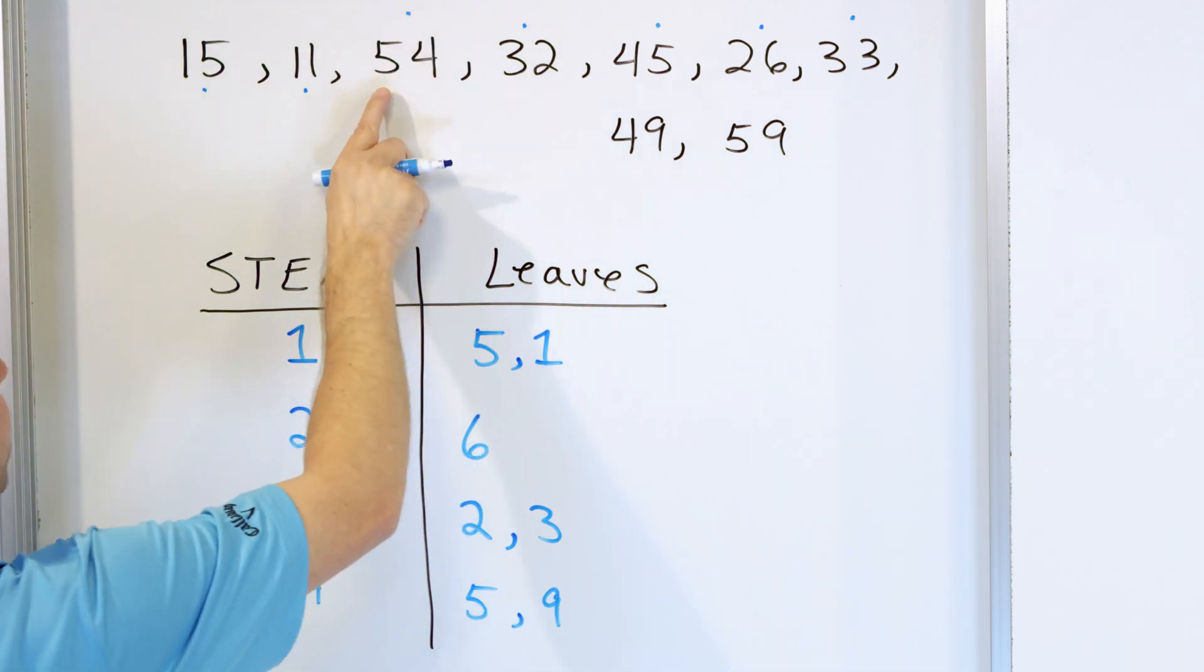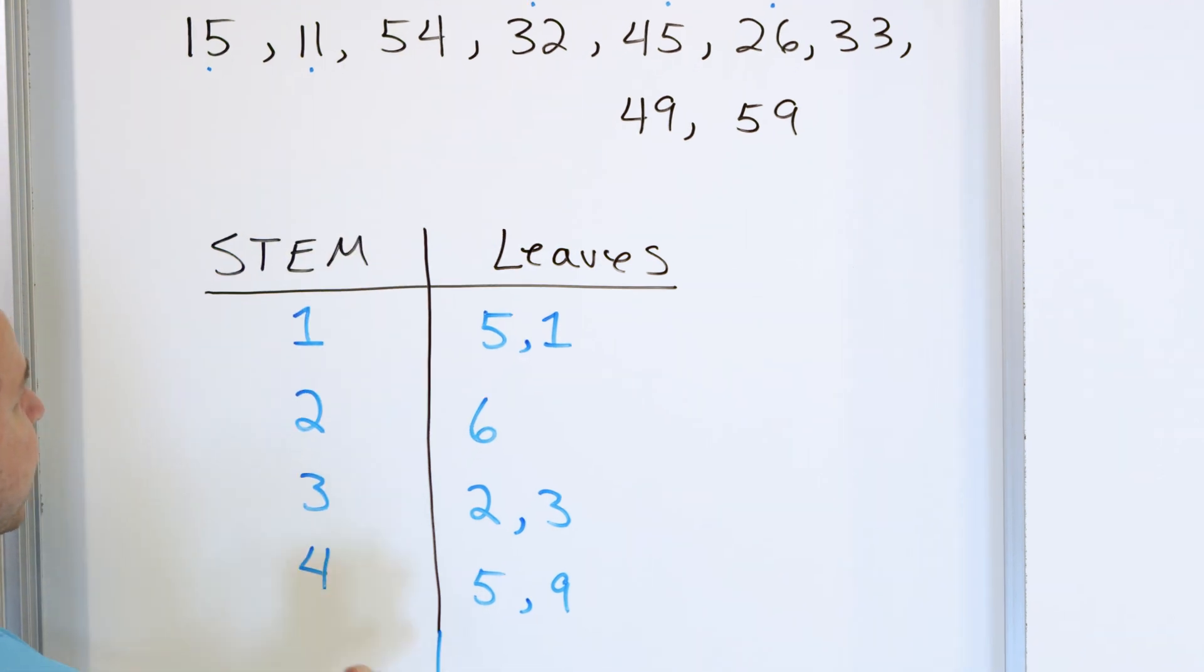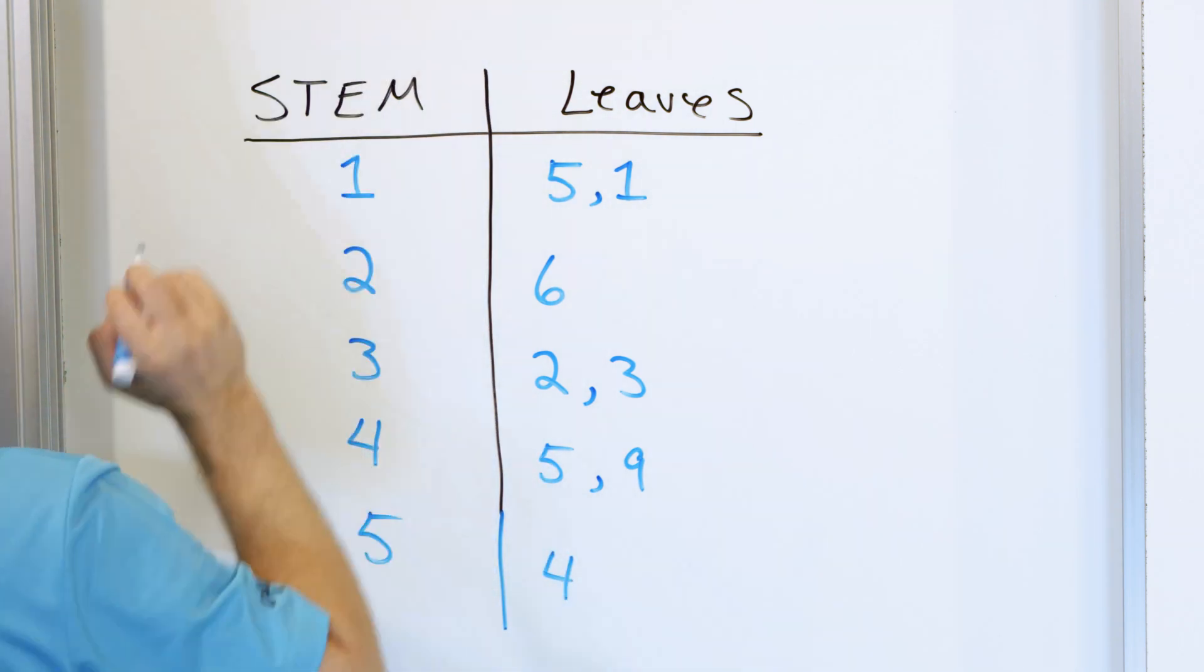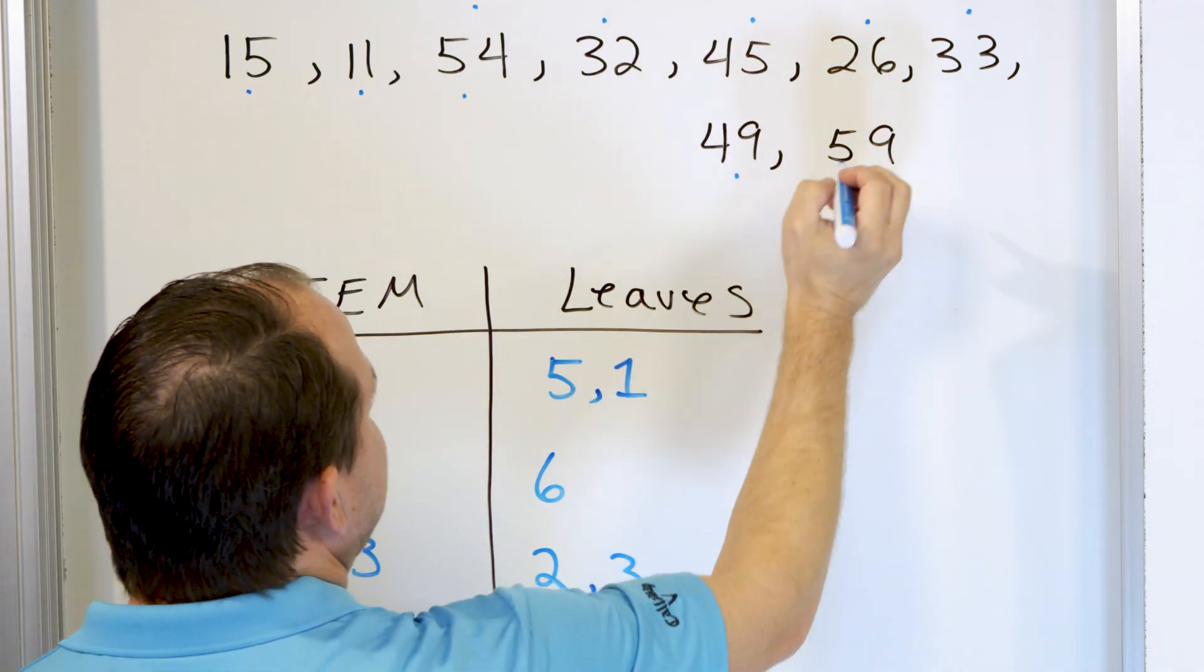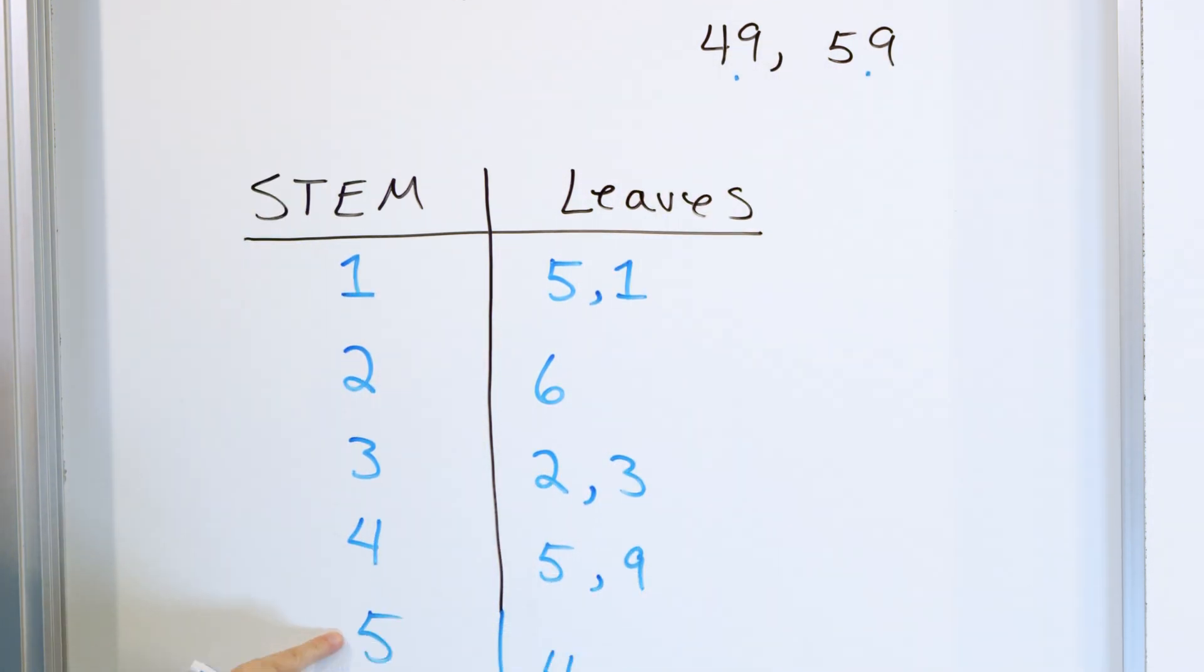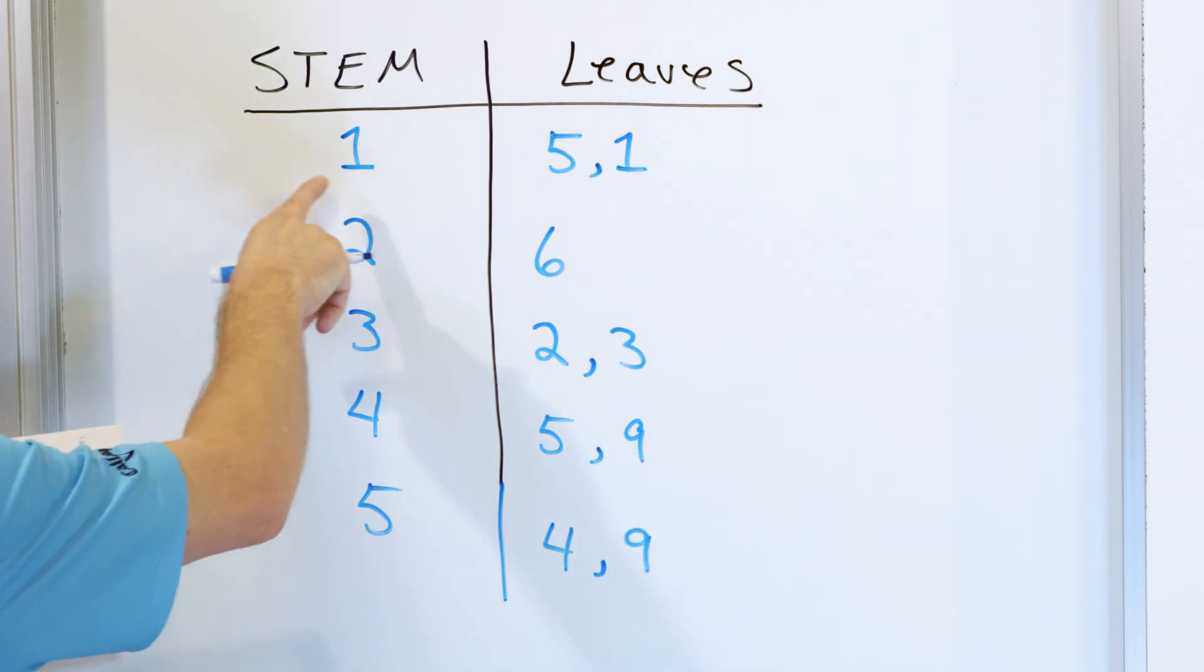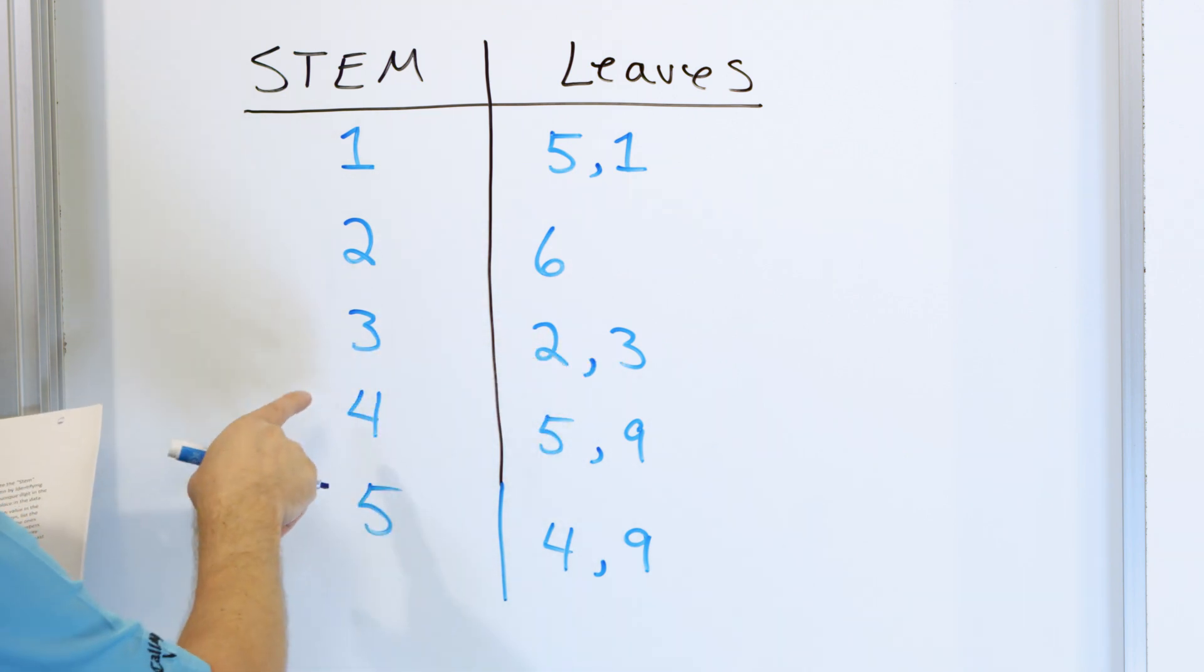And then finally, we have 54. The stem is five, and the leaf is four. So five, and then a four is 54 right there. And then we have 59. Stem is five. We have to put a nine right here. So let me double check myself. We have one, and then five comma one, two, and then six, three, and then two, three, and then four, and then five, nine, and five, and four, nine. Now, this table is complete.